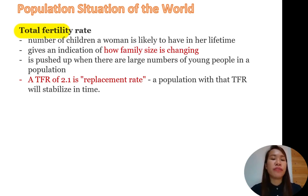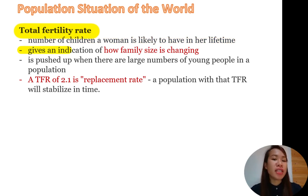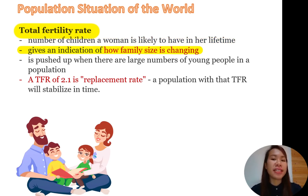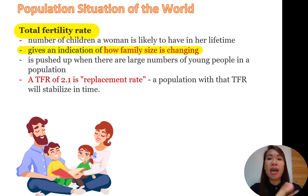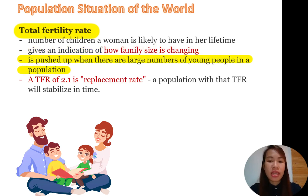First we have to understand what is total fertility rate. When we talk about total fertility rate, this is the number of children that a woman is likely to have in her lifetime. This will give us an indication on how family size is changing. For example, in the Philippines, what is the average number of children a family will have? Take note — this will increase remarkably if the women get pregnant at a younger age, because there will be more time for them to have more children.